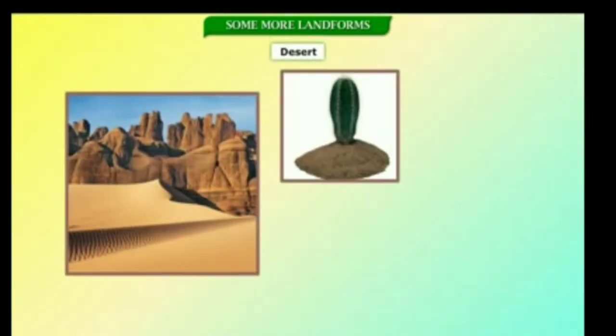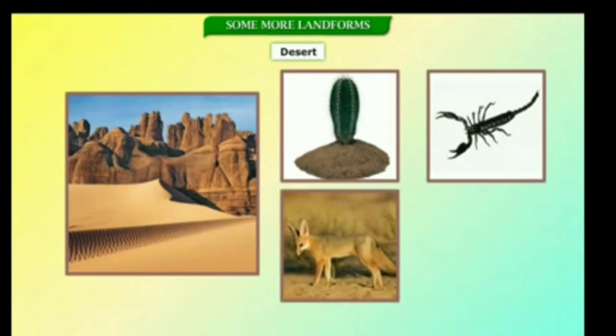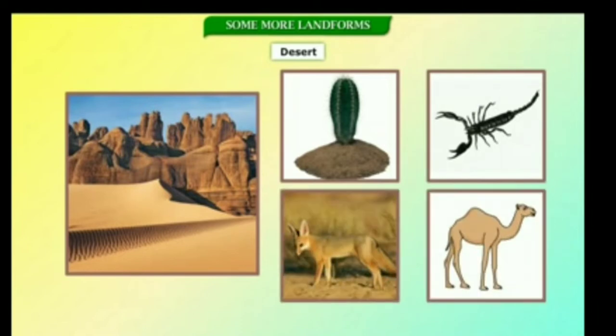Deserts are found at around 30 degrees north and south of the equator. They receive very less or no rain at all. We do not find many trees or plants here, except for the cactus, acacia, and so on. The scorpion, the desert fox, and the camel are common here.